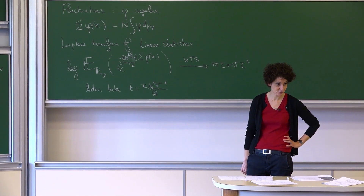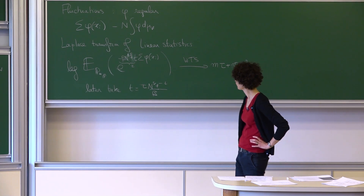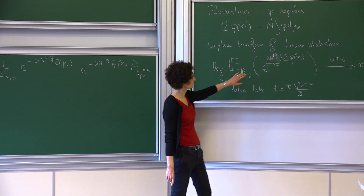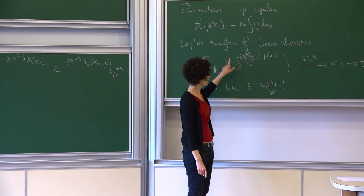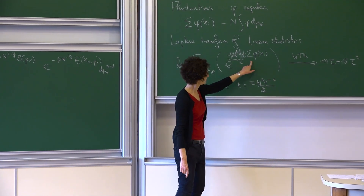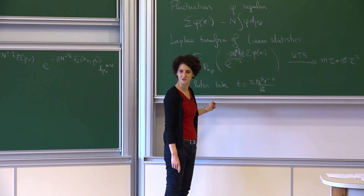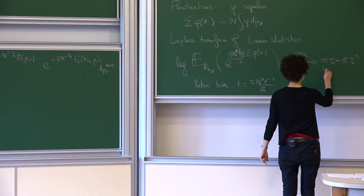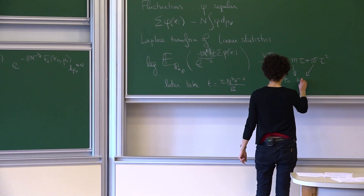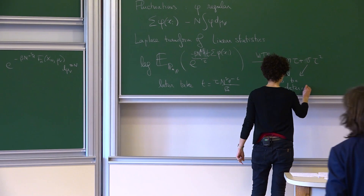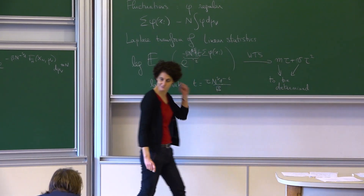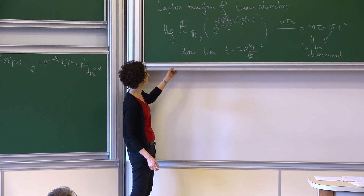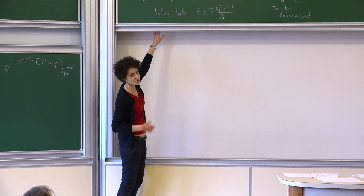If I can show that, I would have proved a central limit theorem in the sense of convergence of the variable sum of phi(xi). [Question: So m and b are a function of phi?] Yes, to be determined. The mean and the variance will depend on phi — we will extract them from the computation, so let's not worry about them yet. I'm just telling you the concept.